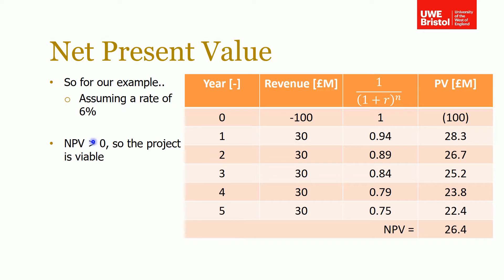We sum all the present values for both ingoings and outgoings. Instead of the 50 million we calculated without discounting, with a 6% discount rate our net present value is 26.4 million. This is greater than zero so the project is still viable, but it's not the 50 million originally estimated. NPV is a much better way of working out whether a project is viable over long periods of time.